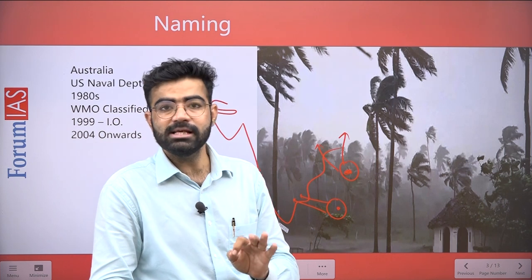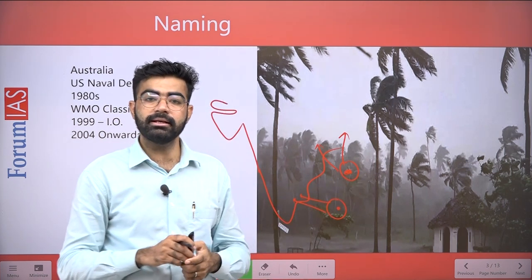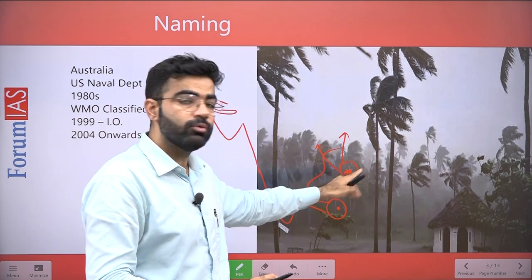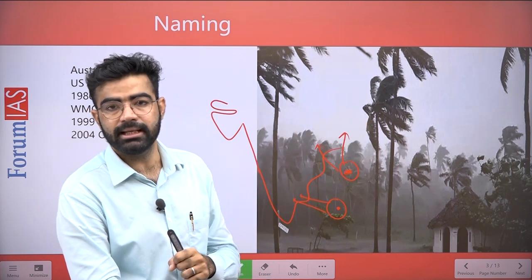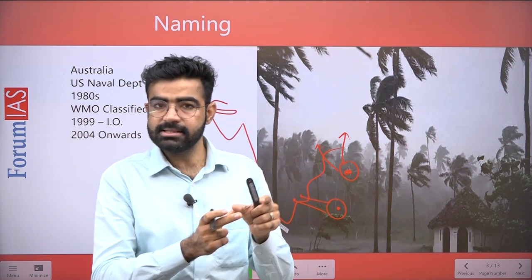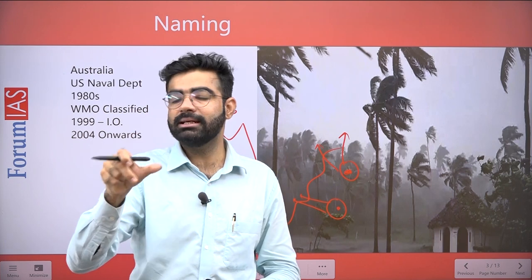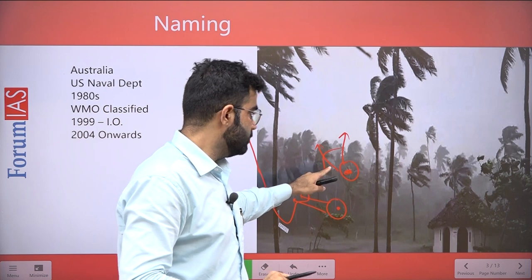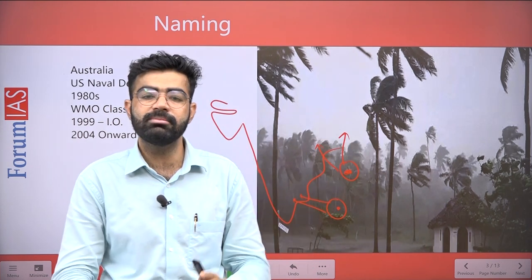That is the first aspect. The second aspect is the scientific study — if you want to study a particular cyclone event scientifically and present evidence about it, it is better to have a name. So that's why naming is very important: first, to remove confusion during disaster management, and second, for scientific study and evidence.